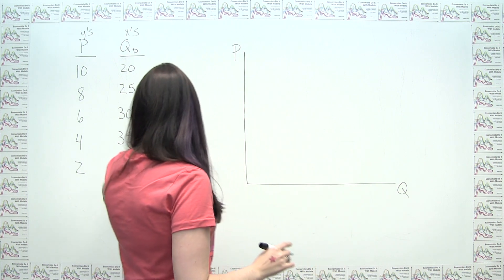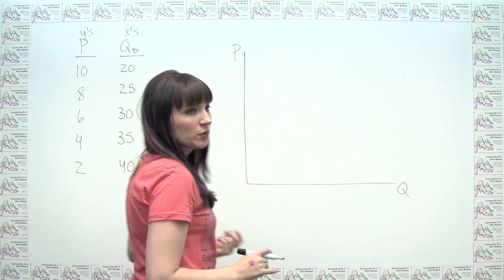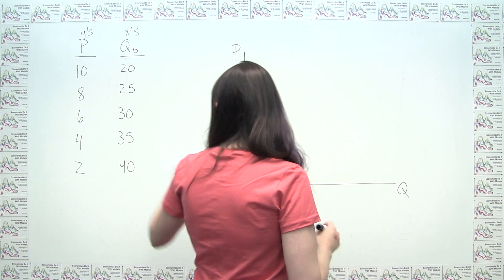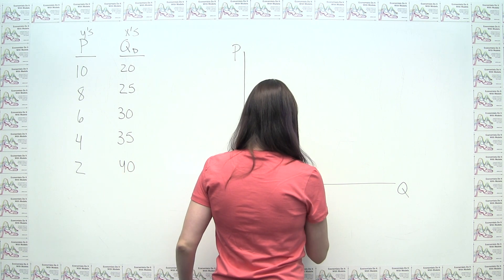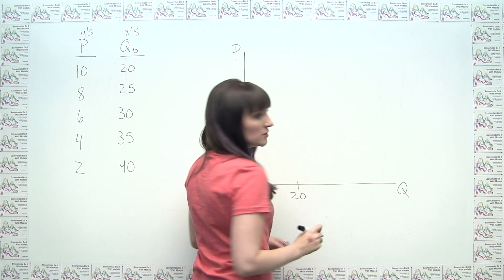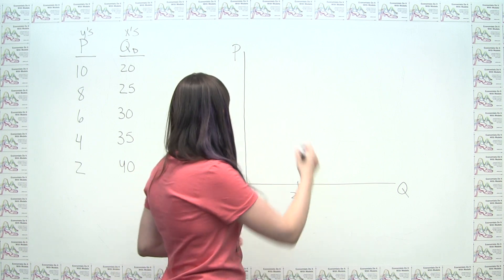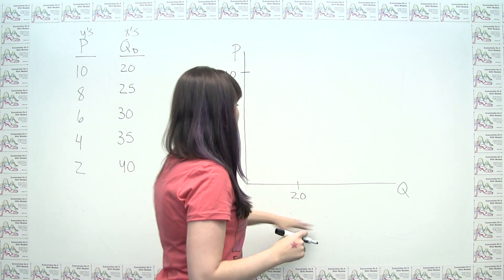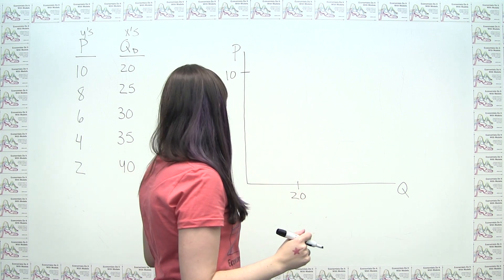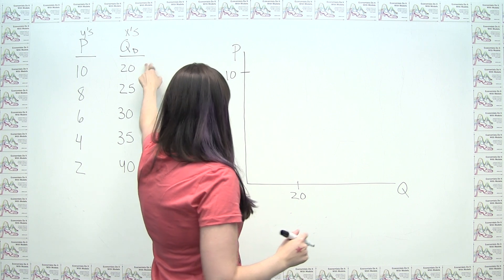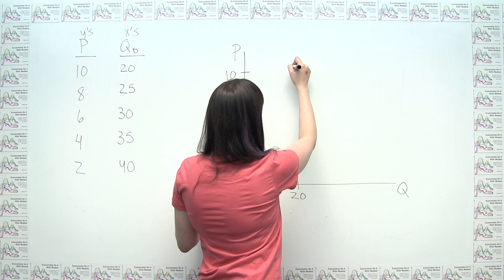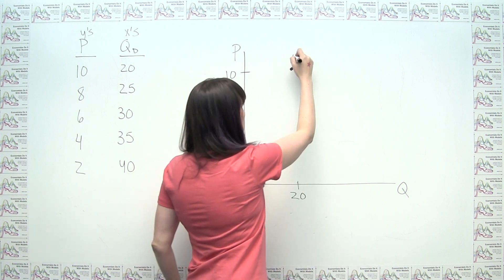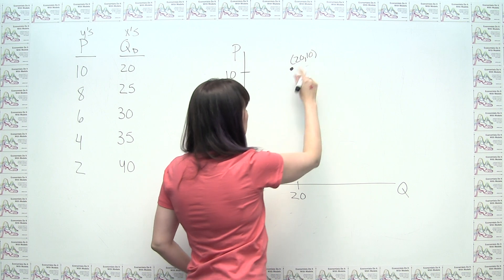So we can look over here and we can say the first point that we'd like to plot is the point 20, 10, right? And we could say, for example, maybe 20 is here. I'll try to do this at least a little bit to scale. I'm not so great at it, but at least to scale relative to one another, not necessarily to scale such that these axes are both on the same scale. But this point here is the point 20, 10 on our demand curve. So that's just going to be this point here.